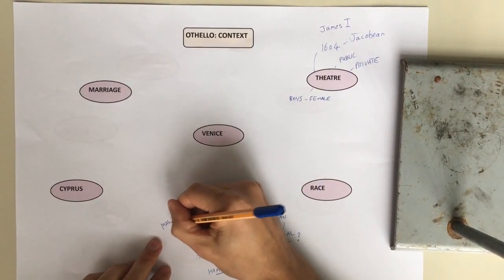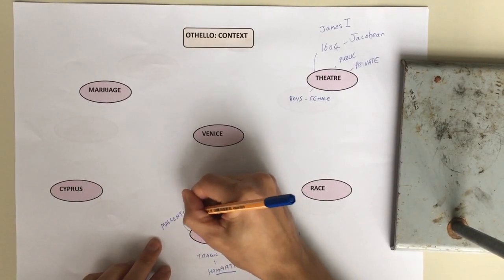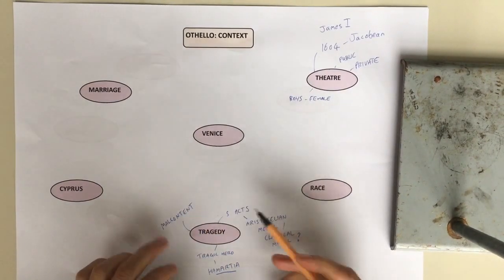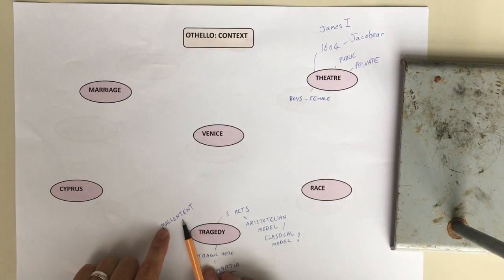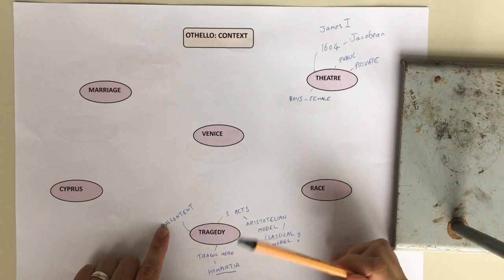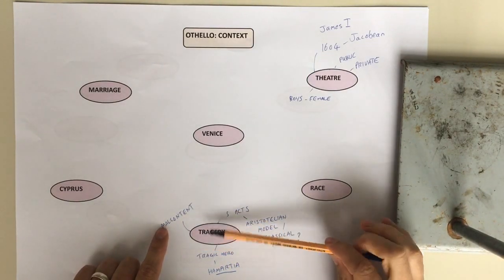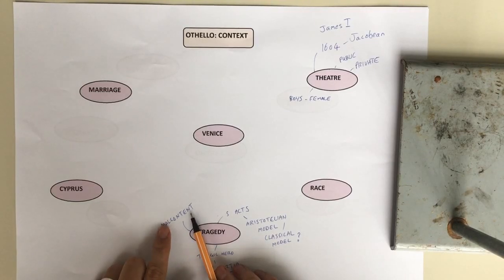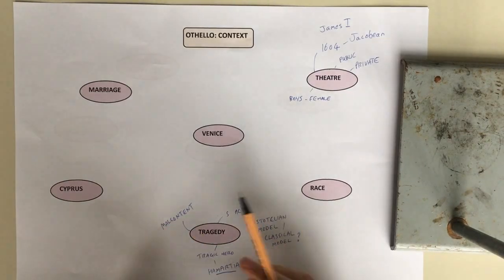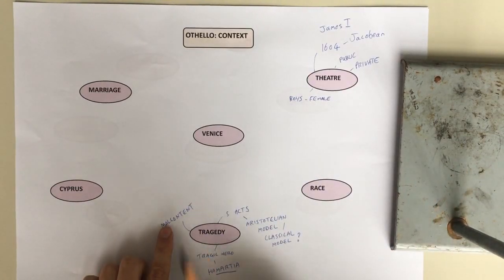Another couple of things that might come in. We often in tragedy for Shakespeare have what we call the malcontent character, somebody who believes they're hard done by and slighted. So we have Edmund in King Lear. We've got several plays at the time where there's this classical character of the malcontent. And of course, Iago is often seen to be the person who rails against authority.